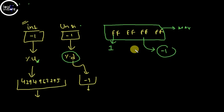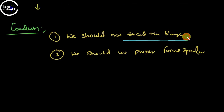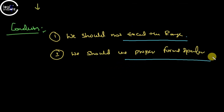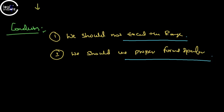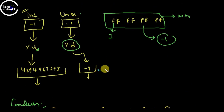So the conclusions are: first, we should not exceed the range — I demonstrated this with an example. Second, we should always use the proper format specifier. Using '%u' in place of '%d' or vice versa causes these unexpected results.